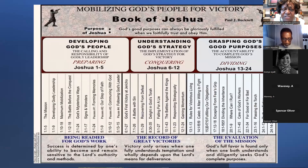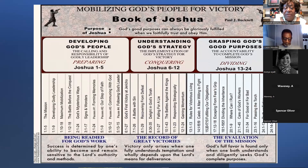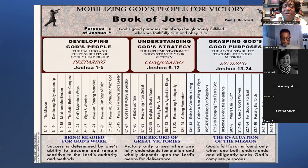If you continue to read the scriptures from Genesis all the way to Revelation, you'll see a bloodline thread of the blood of Jesus Christ that delivers us, that redeems us from the curse of sin. The purpose of the book of Joshua was that God's good purpose can always be gloriously fulfilled when we faithfully trust and obey him. This book develops God's people, preparing us for the life of Christianity.